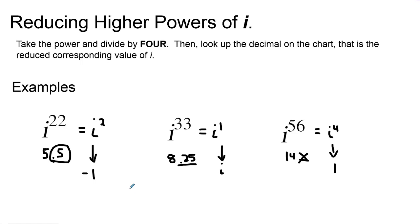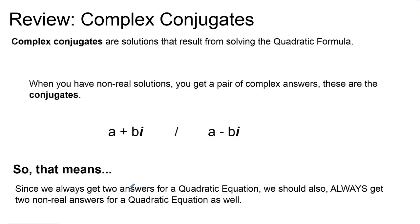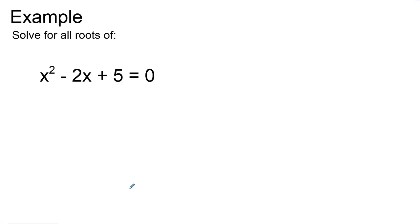We also talked about complex conjugates. These are solutions that result from solving the quadratic formula when you have non-real solutions. You get a pair of complex answers: both an a + bi answer and an a − bi answer. So for a quadratic equation, when you get a non-real answer you always get two non-real answers — two reals or two non-reals. Once you have one non-real answer, just switch the sign and you have the conjugate.